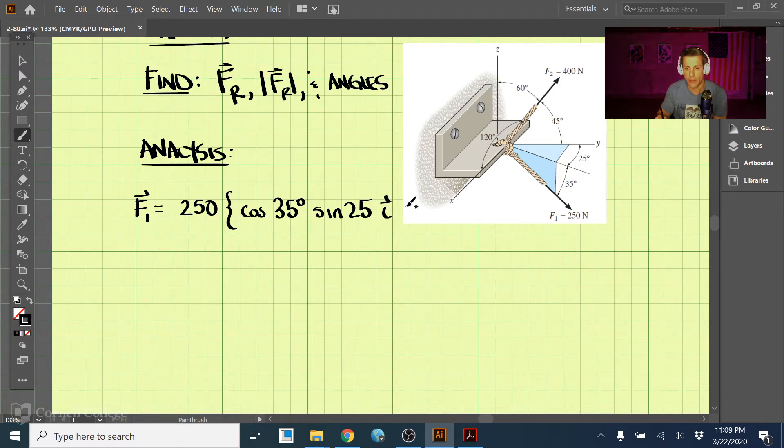And then we add plus the y direction, which will be cosine of 35 degrees and then cosine of 25 degrees. So what I'm doing here is taking the cosine and that gets the projection on this line, and then taking the cosine of 25 and that should project it on the y axis there, and that's in the j direction.